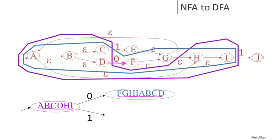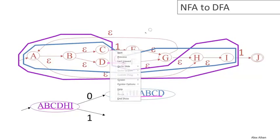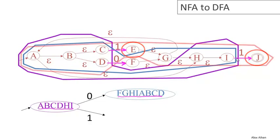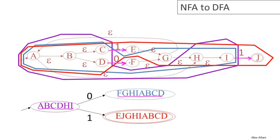Next, let's consider what happens from the start state on an input of one. Looking at the transition function, there are two possible moves: from state C the NFA moves to state E, or from state I it moves to state J. After those transitions, there are epsilon moves, and it turns out the machine could be in any state except state F. This set of states includes the final state of the NFA, so this is also a final state of the DFA — indicating that after reading a one, the NFA could be in an accepting state.